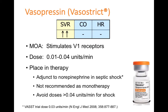Vasopressin is not recommended as monotherapy, based on the same trial where no benefit was seen as monotherapy versus as an adjunct. It's also not recommended to exceed 0.04 units per minute, even in very hypotensive patients. Because vasopressin is a very strong vasoconstrictor that can clamp vessels down hard, adverse effects such as worsening ischemia or even heart attacks have been reported.